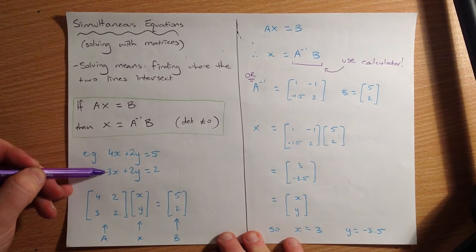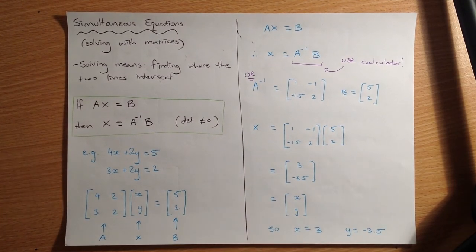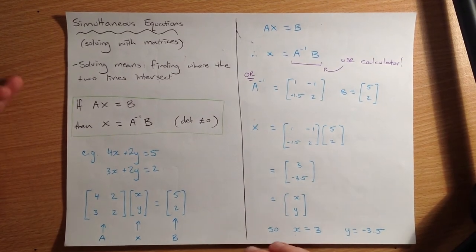So this line, in theory, should cross somewhere on the graph with this line. And hopefully it only crosses once, because straight lines can't cross more than once. That doesn't really make sense. So solving means finding where the two lines intersect. I've just written that there for you.